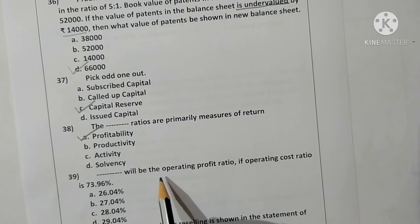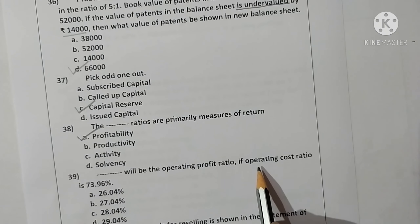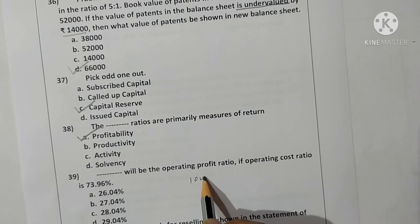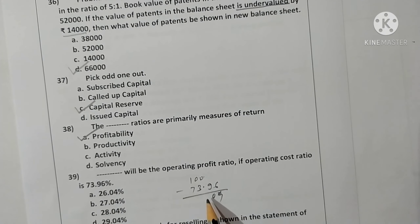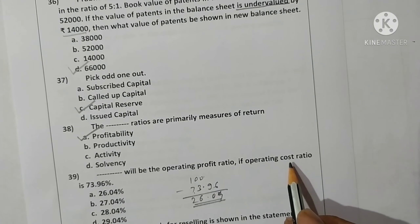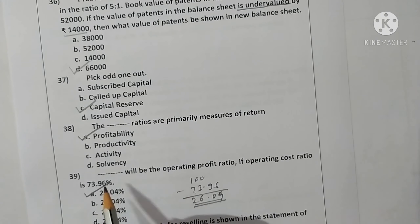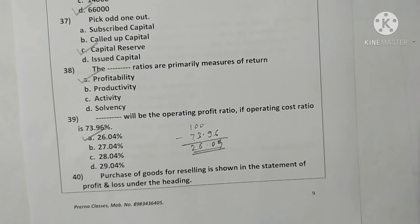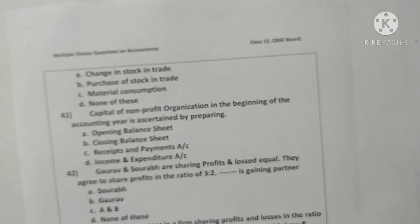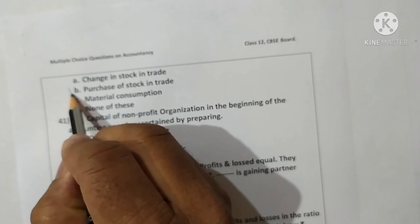Question thirty-nine: what will be the operating profit ratio if operating cost ratio is 73.96%? Total ratio is 100 minus 73.96 = 26.04%. Answer A is correct. Question forty: the purchase of goods for reselling is shown in the statement of profit and loss account under purchase of stock-in-trade. Option B is correct.